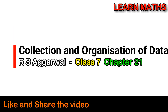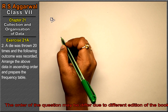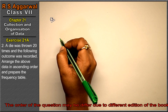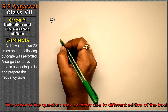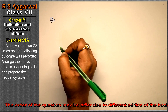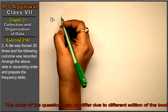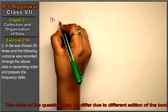Let's do question number 2 of Exercise 21a — Collection and Organization of Data. A dice was thrown 20 times and the following outcomes were recorded. We need to arrange the data in ascending order and prepare the frequency table.